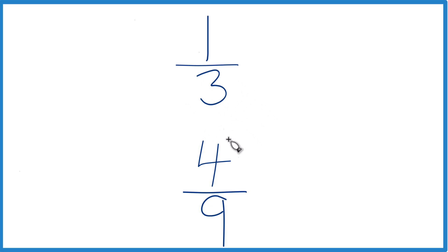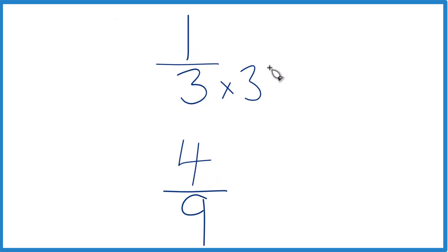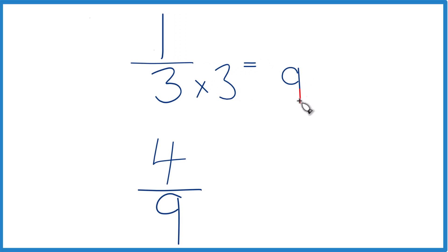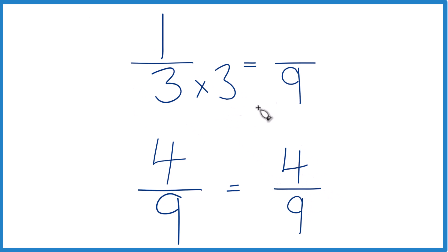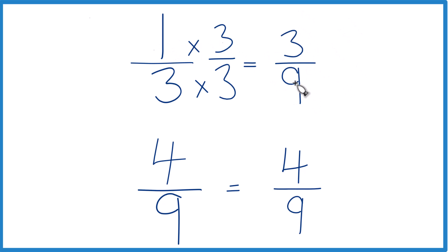I can see that I have nine here and three here. So I could multiply three times three, and that would give me nine. Down here it's already nine, so I'm just going to keep this as four-ninths. But I can't just multiply the denominator by three — I also need to multiply the numerator by three, because three over three is just one. I don't change the value, just the way it's represented. One times three equals three, and three-ninths is an equivalent fraction for one-third.